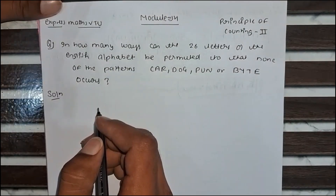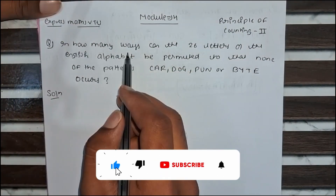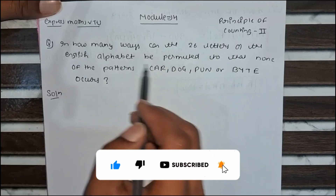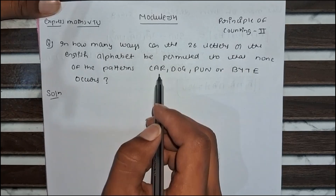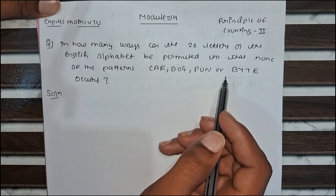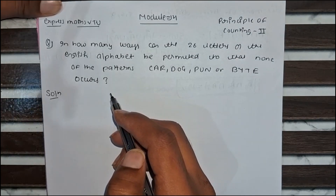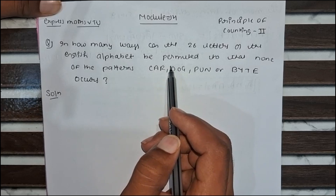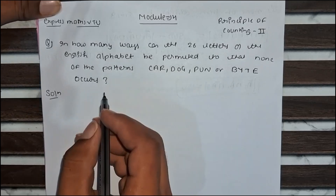Hello everyone, today we are going to solve another important problem from module 2. In how many ways can the 26 letters of the English alphabet be permuted so that none of the patterns car, dog, bone, or bite occurs? In this question, we have to find in how many ways can the 26 letters be permuted so that the given patterns do not occur.